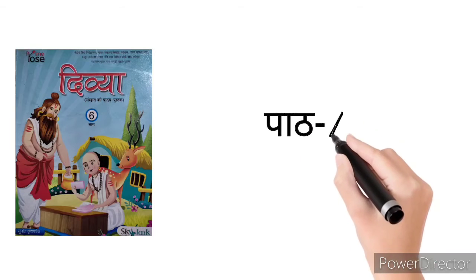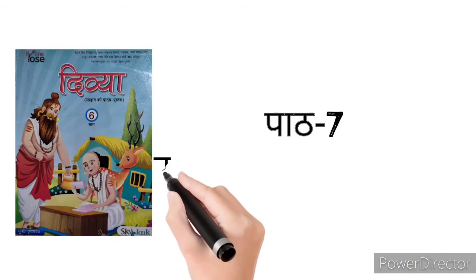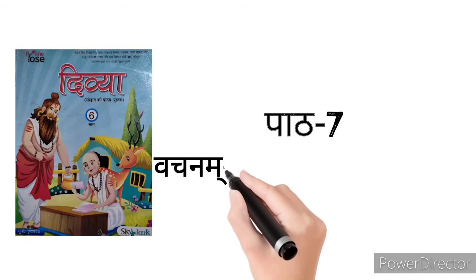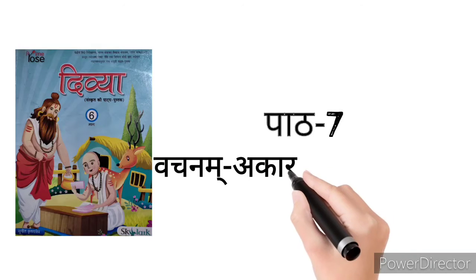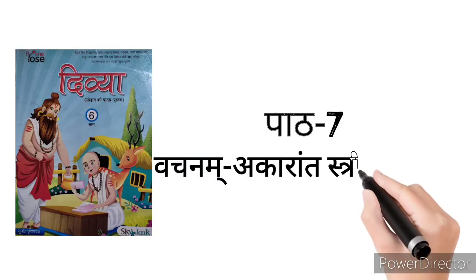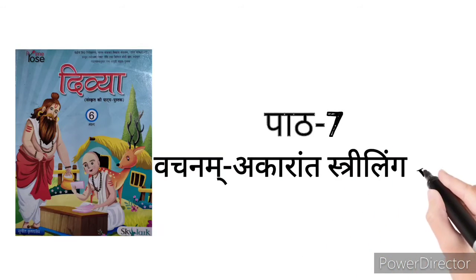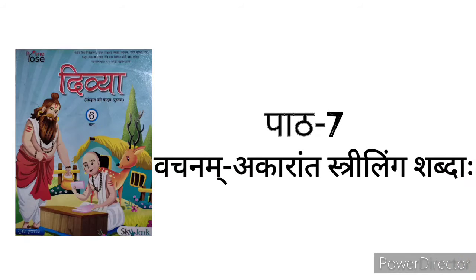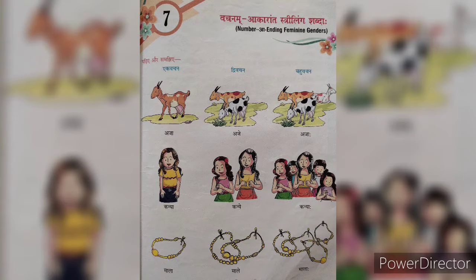Part 7: Vachanam Akaranth Istri Ling Shabda. पढ़िये और समझिये - एक वचन, द्वि वचन, बहु वचन: अजा, अजे, अजाः। कन्या, कन्ये, कन्याः। माला, माले, माला।